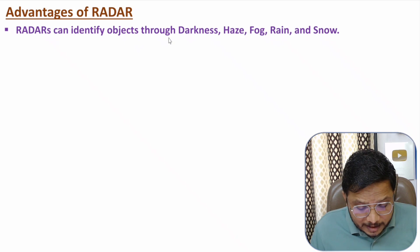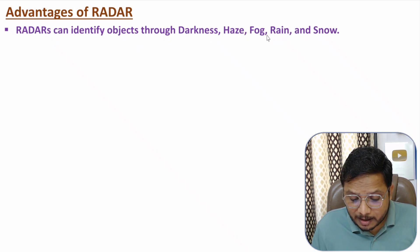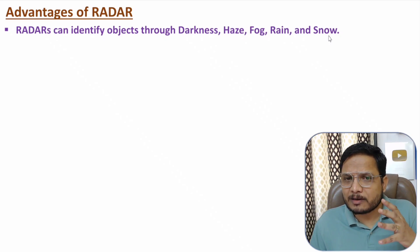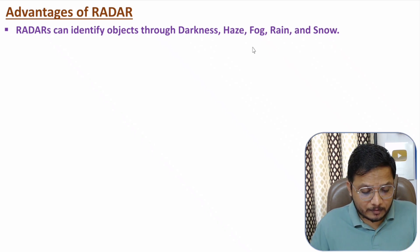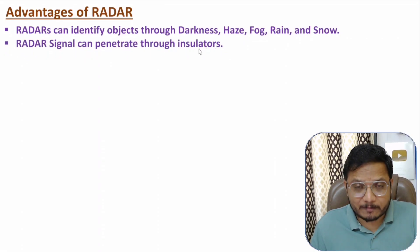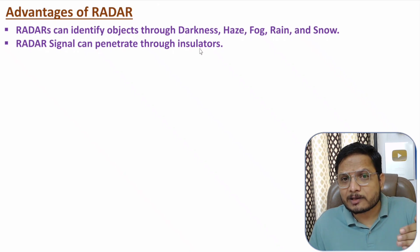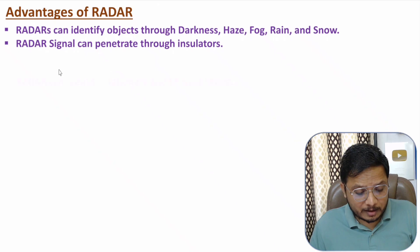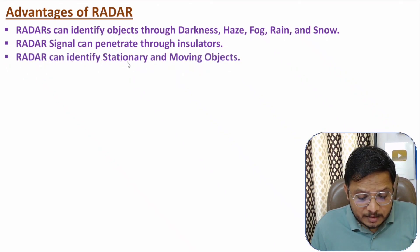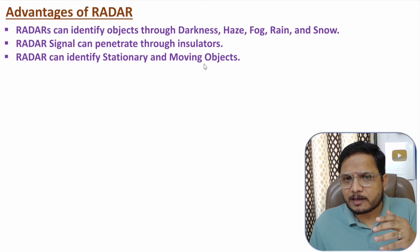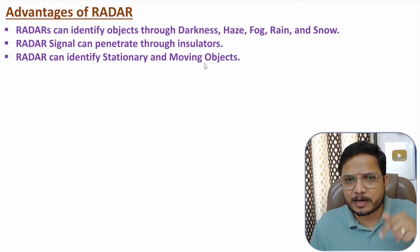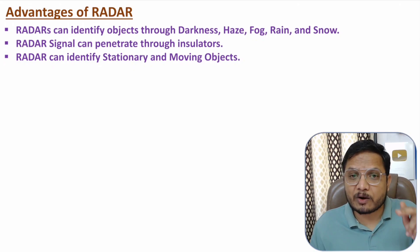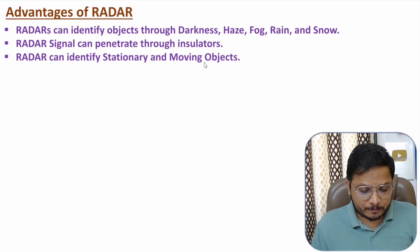Now let us talk about advantages of radar system. Radar can identify objects through darkness, fog, rain, and snow — conditions where humans normally cannot see. In any weather condition, radar can identify objects. Radar can also penetrate through insulators, so even if an object has insulators, radar can still identify it. Radar can identify both stationary objects and moving objects — velocity of a moving object can be calculated based on frequency drift as per Doppler's effect.